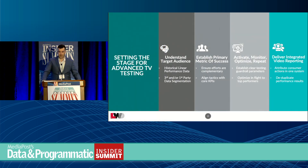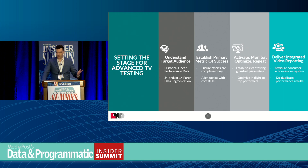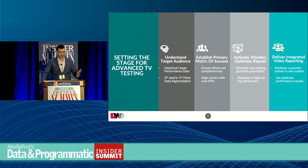Setting the stage — how do we talk to specific clients that are really interested in testing and the different parameters that go along with that? First, we have to understand the target audience. We have to look at what does that historical linear performance data look like, what networks are working, what station groups are working, and can we extend those specific properties and reach those different users within the advanced TV landscape?